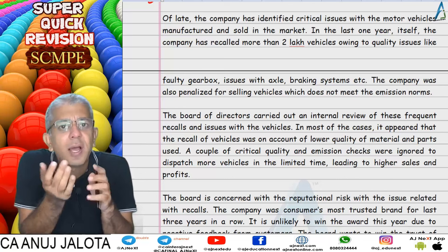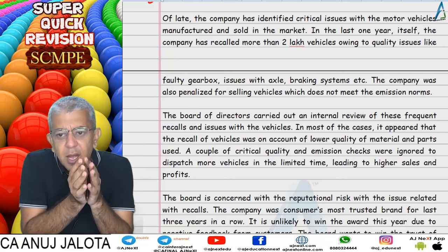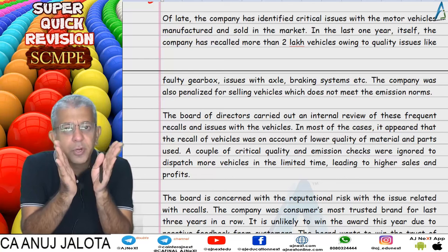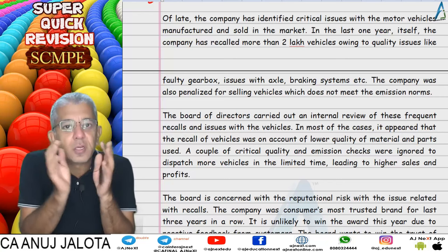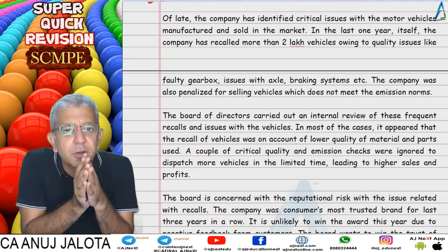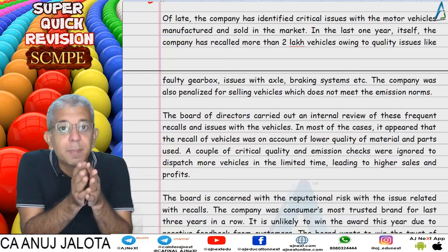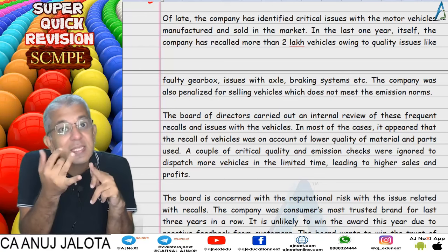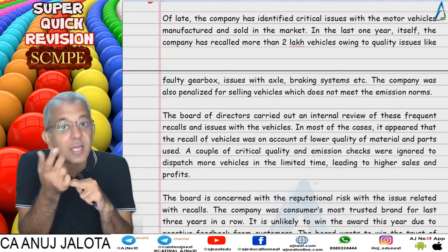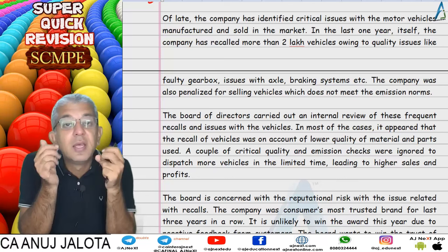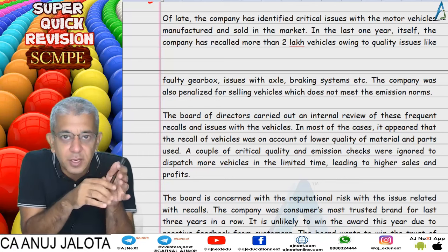As a profit center manager, you'd want higher sales and could do anything to sell more goods. Within a limited time, these managers started producing more vehicles by skipping quality checks during manufacturing — very good for the managers because their sales and bonuses started increasing, since performance was being measured only financially and nothing else.